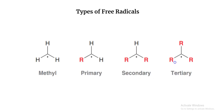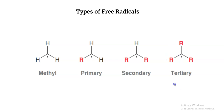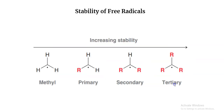Now let's move on to free radicals. Free radicals are intermediates where the carbon has an unpaired electron. Whenever you see an unpaired electron on a carbon, that's a carbon free radical. It could be a methyl carbon free radical with the unpaired electron on the carbon. If the unpaired electron is on a carbon connected to one other carbon, that's a primary free radical. Connected to two other carbons — that's a secondary free radical. Connected to three other carbons — that's a tertiary free radical.